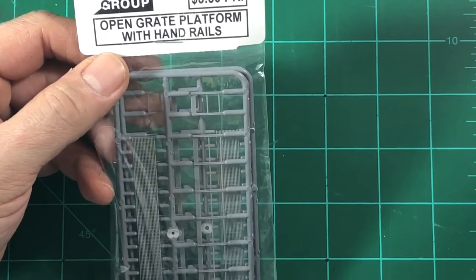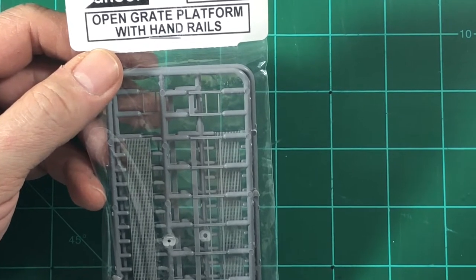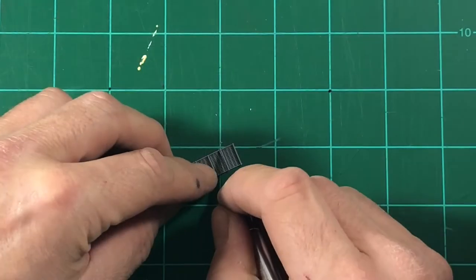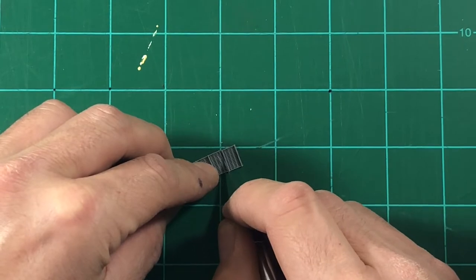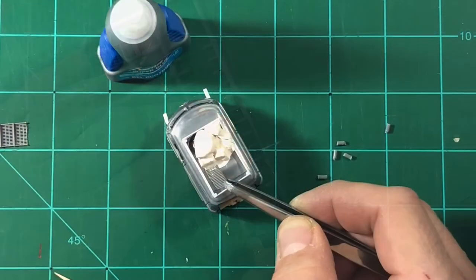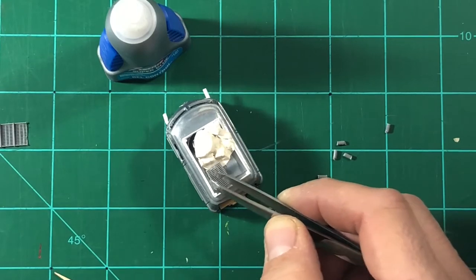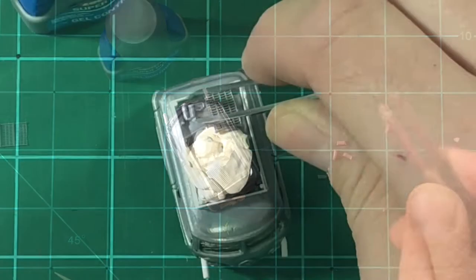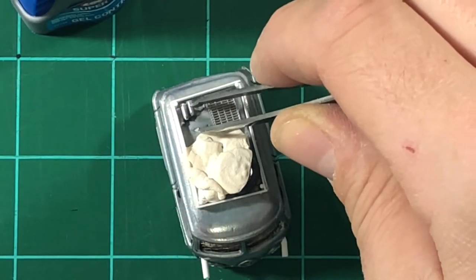I came across this from a company called the Tichy Group. It is an open grate platform for HO scale trains. I believe a small piece of this and these small little bits will look good on top of the roof. Using some super glue, we will fix them to the roof. I think it is starting to look good. What do you think so far? Let me know in the comments below.